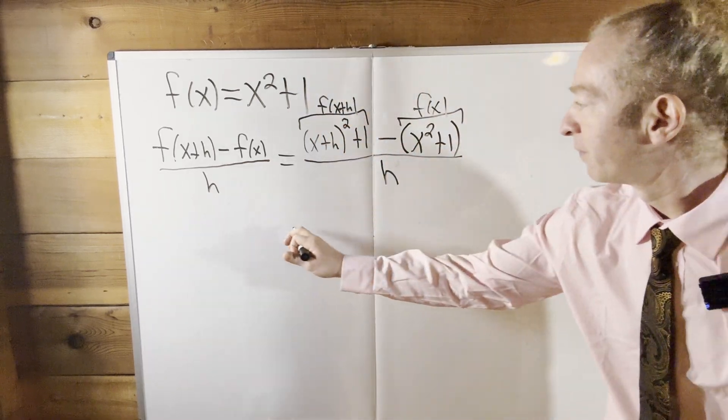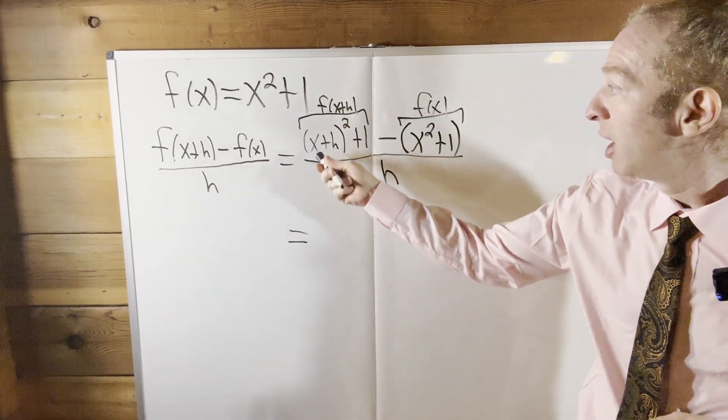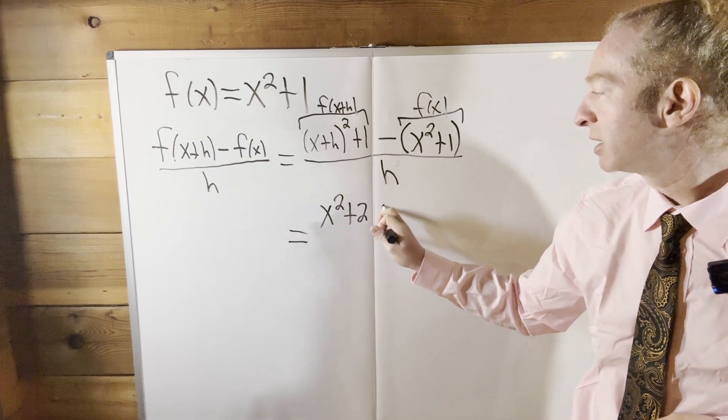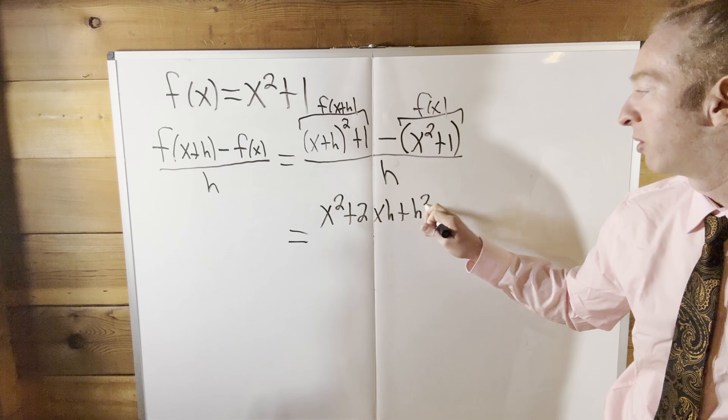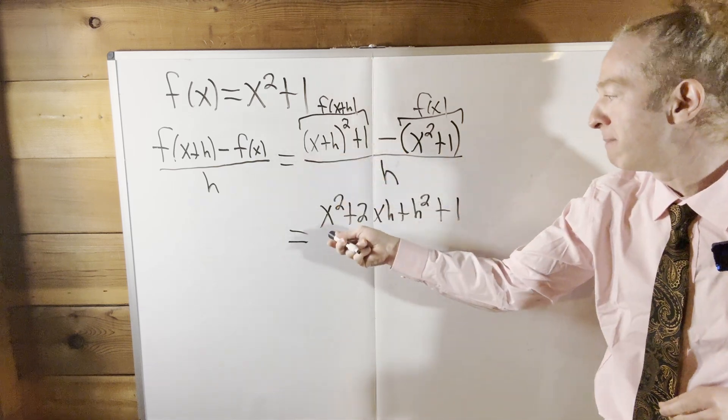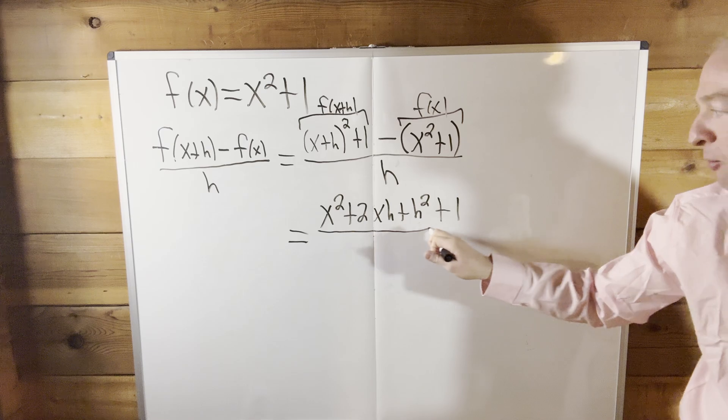So this is equal to, okay, this is equal to x squared plus 2xh plus h squared. So that's, and then plus one. So this is just from memory, okay? Just pure memory.